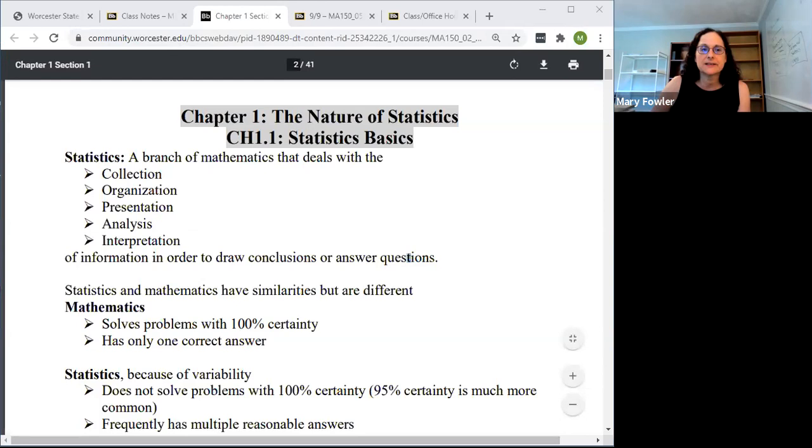Statistics is a branch of mathematics that deals with information collection, organization, presentation, analysis, and interpretation of information. Statistics really is not mathematics because in mathematics problems are typically solved with 100% certainty - there's a correct answer. But in statistics typically that's not the case. We really are more likely to come up with statements that say we're 95% certain of an effect.